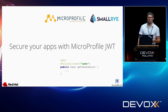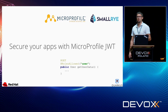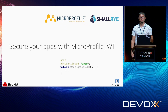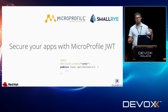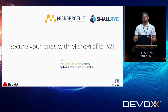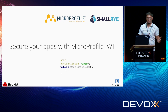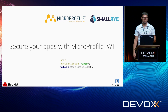MicroProfile also contains MicroProfile JWT, which stands for JSON Web Token. This is a specification thanks to which you can secure applications with JSON Web Tokens. This is generally a token that contains, for example, user roles. It's signed by the token issuer — some trusted authority — and then a service, when it gets such a request, can verify the token signature without a round-trip to the issuer and process the request accordingly. You can use common annotations like Roles Allowed to define security.